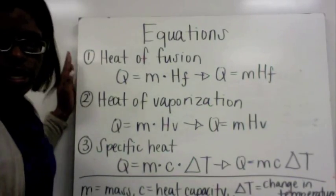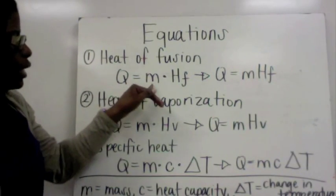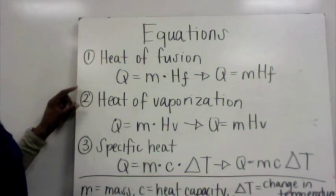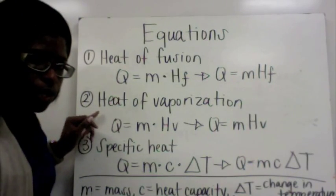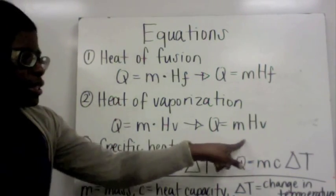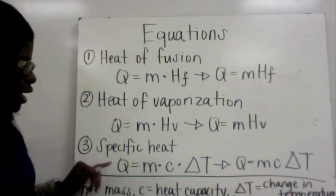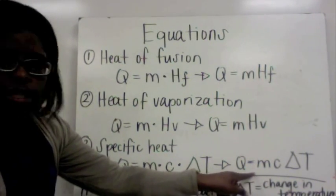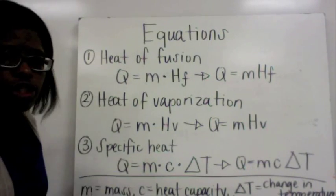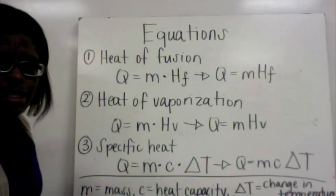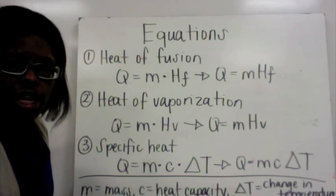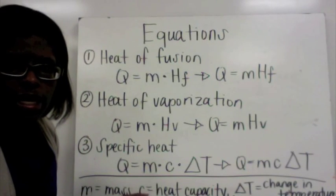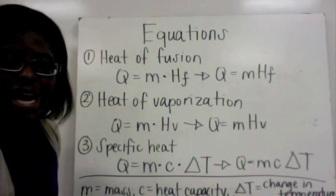Our equations: heat of fusion is Q = mHf; heat of vaporization is Q = mHv. For specific heat, it's Q = mcΔT, where M is mass, C is heat capacity, and ΔT is the change in temperature. The equation for delta T is ΔT = Tf minus Ti, where Tf is the final temperature and Ti is the initial temperature. You'll use these equations when solving problems.